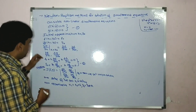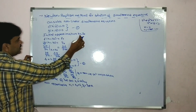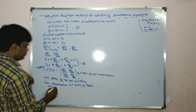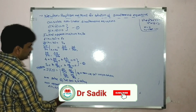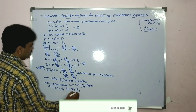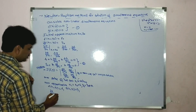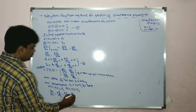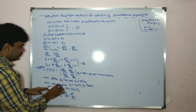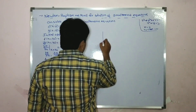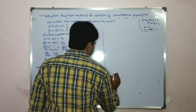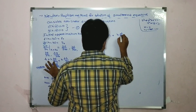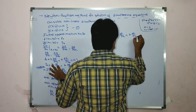Again, from x1 and y1, find f of x1 comma y1 — that is f1 — and g of x1 comma y1 — that is g1. This time find ∂f/∂x₁, ∂f/∂y₁, ∂g/∂x₁, ∂g/∂y₁. The equations become: f1 plus h into ∂f/∂x₁ plus k into ∂f/∂y₁ equal to zero — say this is equation three.